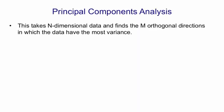In principal components analysis, we have n-dimensional data, and we want to represent it using less than n numbers. And so we find m orthogonal directions in which the data has the most variance, and we ignore the directions in which the data doesn't vary much.